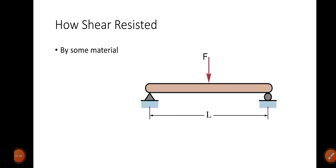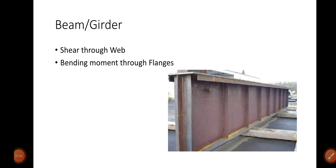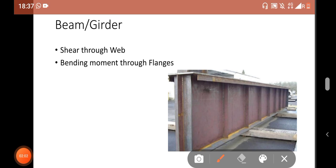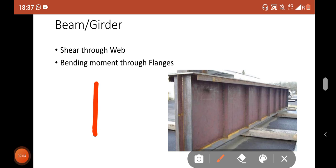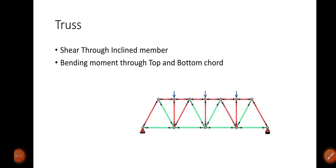So these are the effects of any load. Now, how is shear resisted, and how is bending moment resisted? In the case of a beam or girder with an I-section cross-section, the shear is resisted through the web part, and the bending moment is resisted through the flange part.